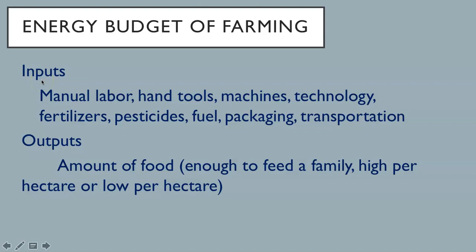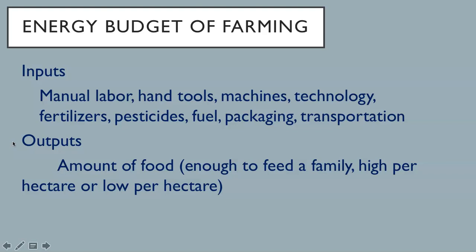Inputs to terrestrial food production include manual labor, hand tools, machines, technology, fertilizers, pesticides, fuel, packaging, and transportation. Outputs include the amount of food — is it enough to feed the family, or does it have high yields per hectare or low yields per hectare? There is data on the efficiency of different terrestrial food production systems. Efficiency involves calculating the energy it takes to produce the food and deliver it to the market, including the labor and fuel all along the production processes, the energy used to prepare the soil, sow the seed, harvest the crop, prepare and package it for the market, transport it to the market, and the cost of dealing with waste products.